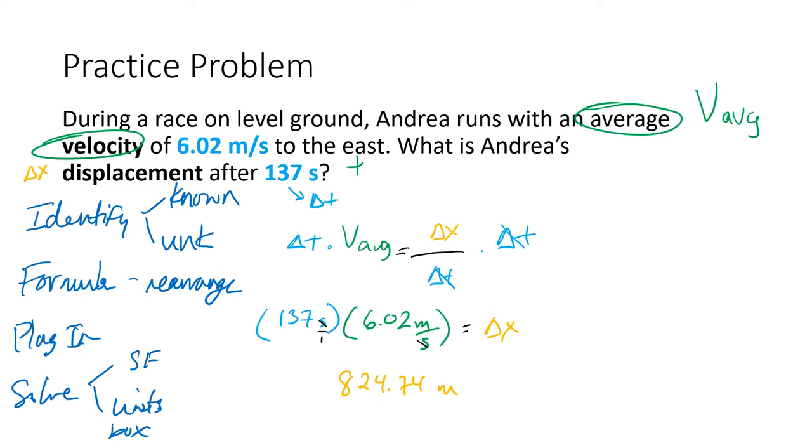So three sig figs, one, two, three. Look back, 825 meters, and this is comparable to 824. So the rounding sig figs make sense with this one. Very good.